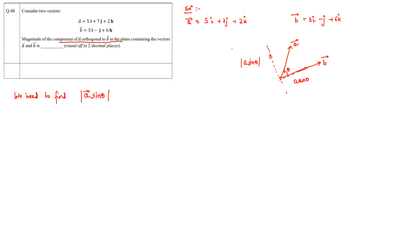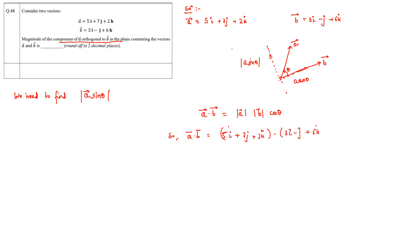To find angle θ, we first compute the dot product a·b, which equals the magnitude of a times the magnitude of b times cosθ. Computing a·b: (5)(3) + (7)(−1) + (2)(6) = 15 − 7 + 12 = 20.